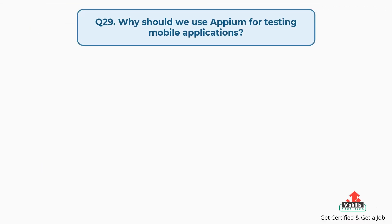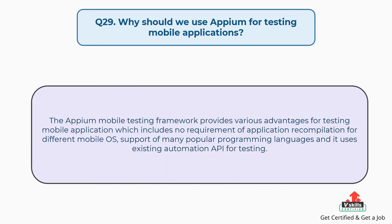Question number 29: Why should we use Appium for testing mobile applications? The Appium Mobile Testing Framework provides various advantages for testing mobile applications, which includes no requirement of application recompilation for different mobile operating systems, support for many popular programming languages, and it uses existing automation APIs for testing.